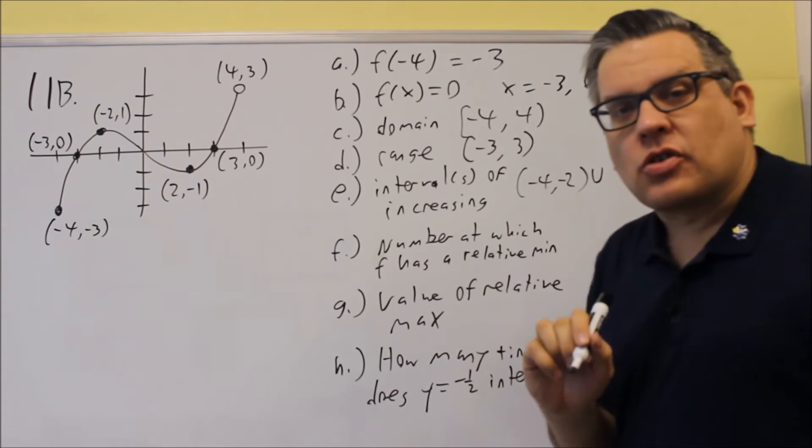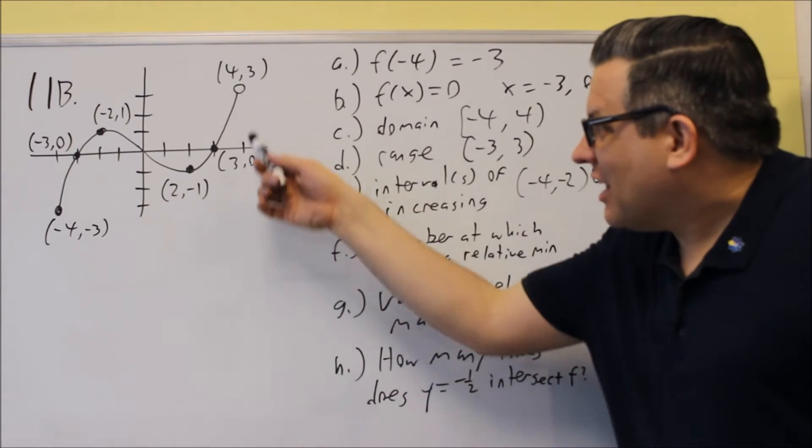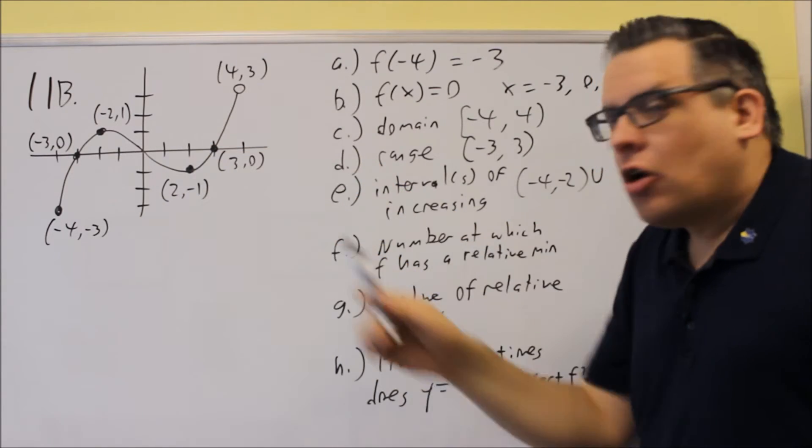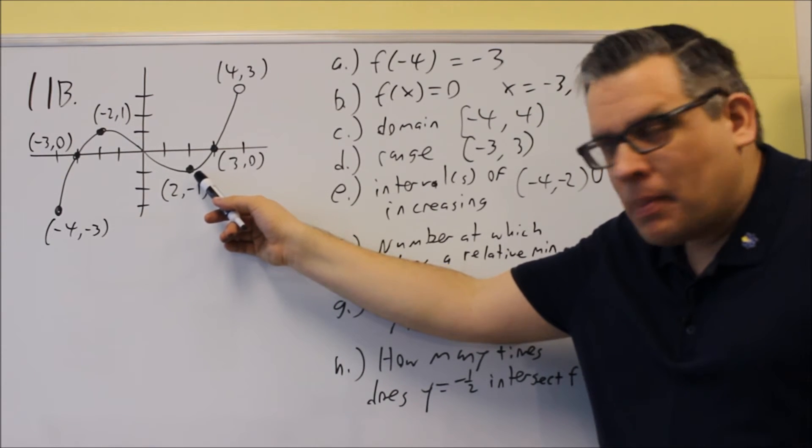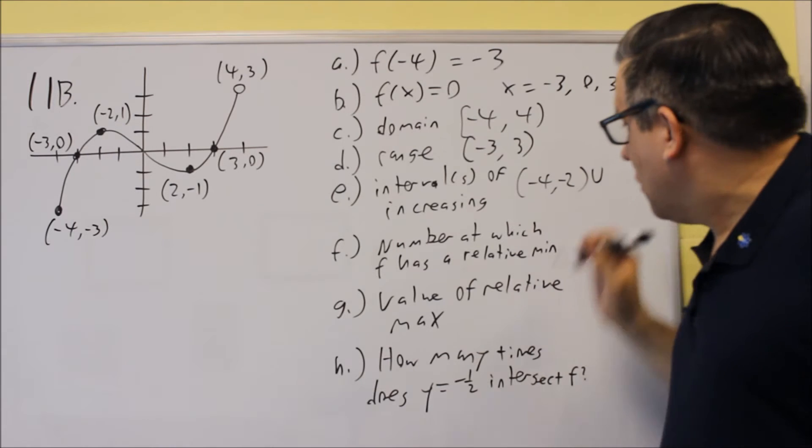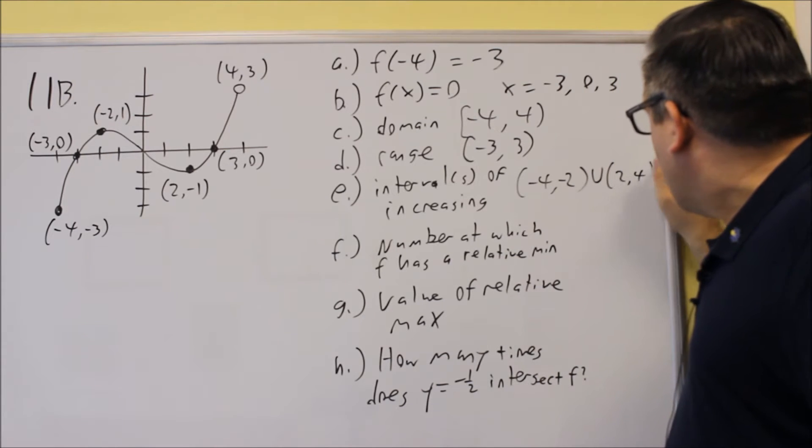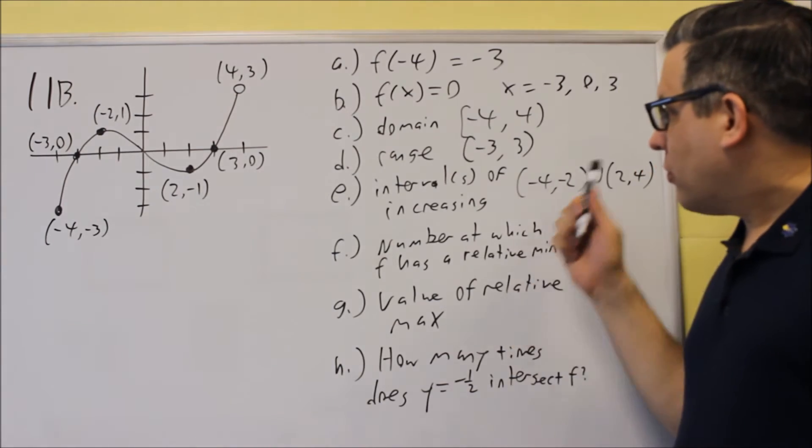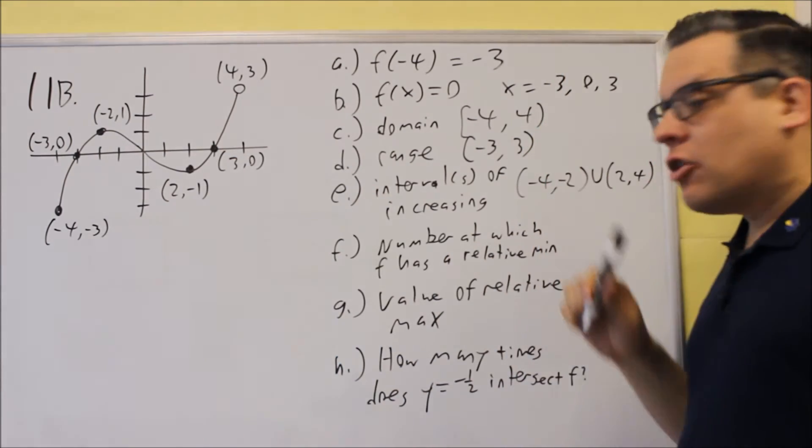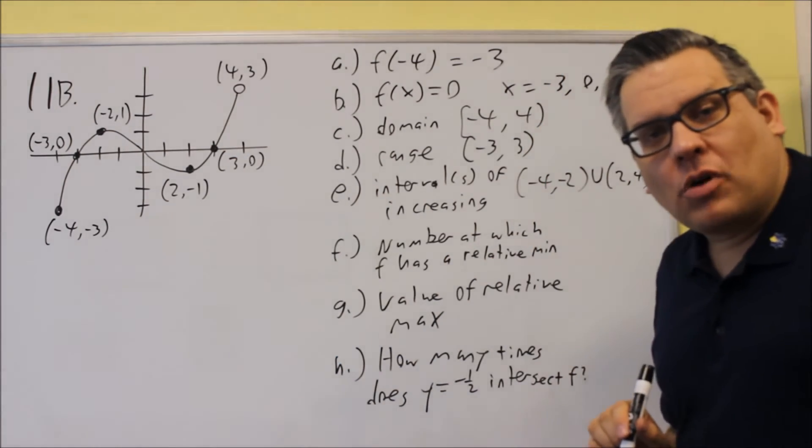Now, we have to put a union here because there's going to be another part of our answer, and that's going to be this section over here. So it starts going uphill at the x value of 2. It stops going uphill at the x value of 4. So we're going to do 2 to 4. And so you have to have both of those as your answer. It's two different places where the graph is increasing or going uphill as you move from left to right.